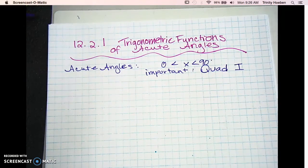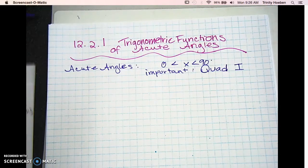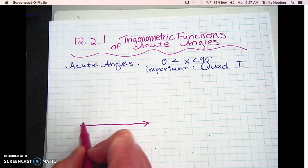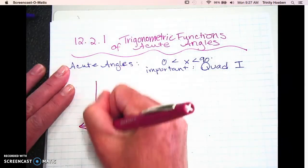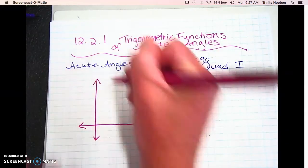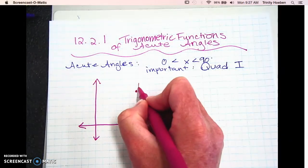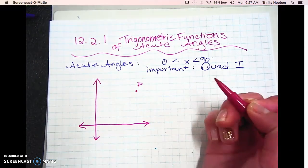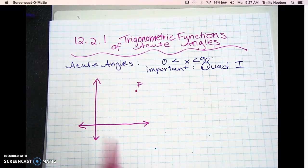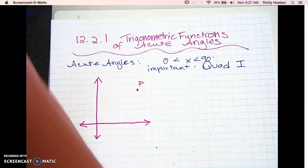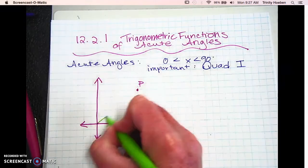If it doesn't, it's going to make it a little more complicated. So if we start putting angles here in quadrant 1, sometimes you're just going to be given a point, like point P, and they'll tell you where it's at. And if they say it's acute, it should end up in quadrant 1, and it's going to form a triangle.